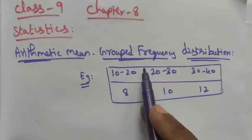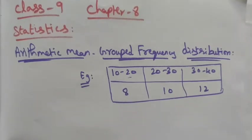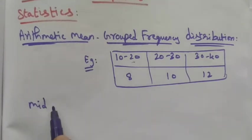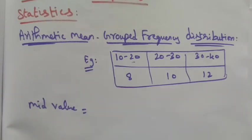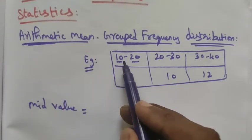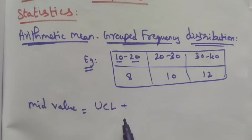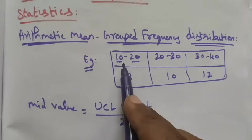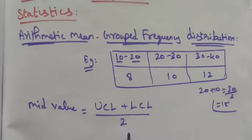First, we want to find the mid value for each class interval. For example, the class interval is 10 to 20, where the upper class limit (UCL) is 20 and the lower class limit (LCL) is 10. The mid value is calculated as UCL plus LCL divided by 2: (20 + 10) / 2 = 15.